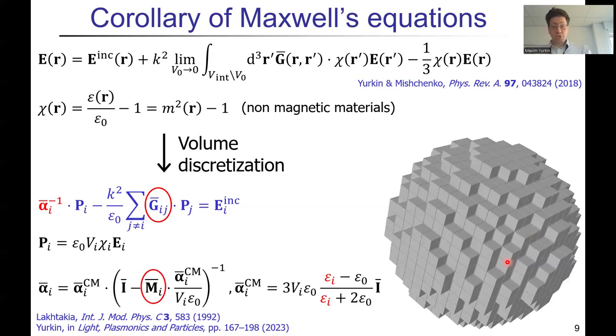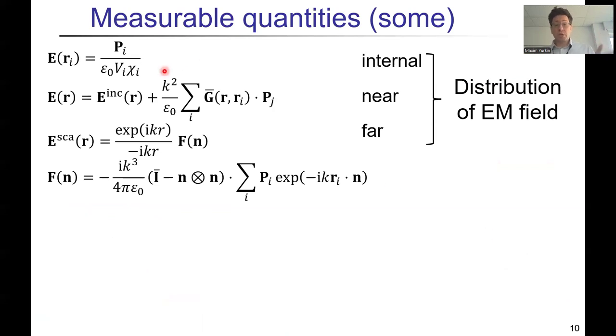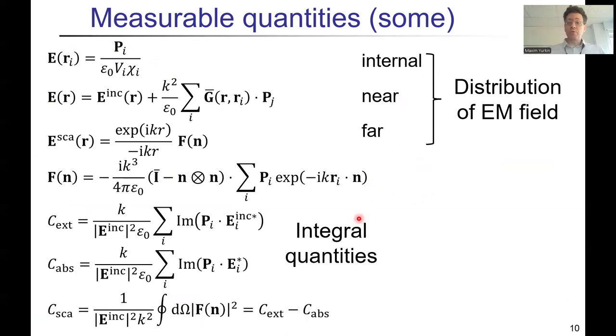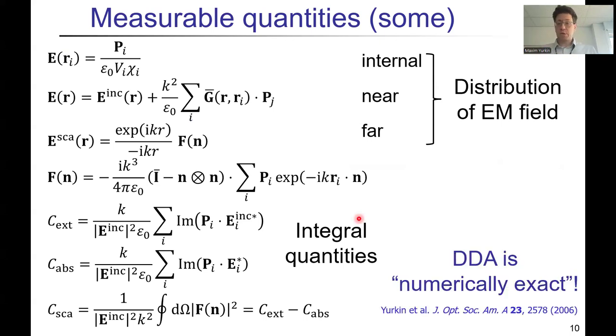But after you solve these equations, which can be non-trivial, but still, you get dipole polarizations, and from them you can compute anything you want. Any fields, internal, near fields, far fields, scattering, some scattering amplitude, extinction, absorption, scattering, cross-sections, whatever you want. And importantly, the DDA, at least when it's derived like this, is a numerically exact method, which means that if you refine discretization, so you fix the particle and take more and more voxels or dipoles to discretize the particle, then you will have better and better accuracy of your solution. So the method will converge to the true solution.